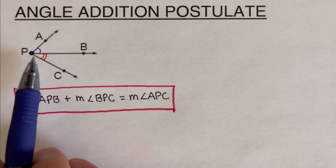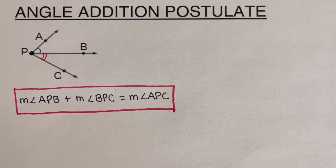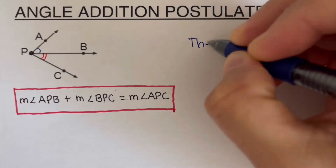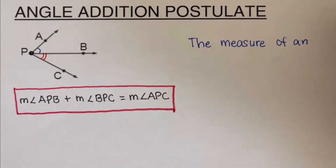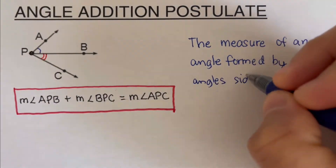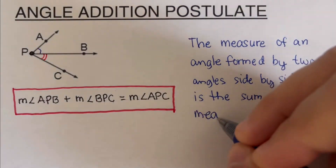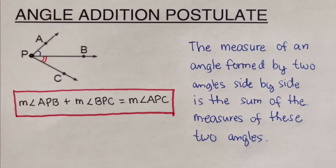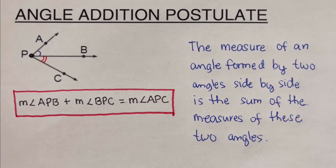So that means if we add these two angles, that's equal to the whole thing. I'm going to write the statement up here. This is the statement for the angle addition postulate. Now let's take some examples.